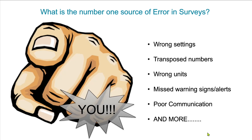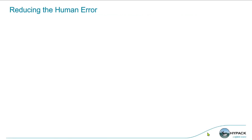That means you may enter settings wrong, you transpose numbers — I've done it, I'm 100% guilty of it. I went to measure something, transposed a number, threw it off by a foot. It happens. Missing warning signs — HyPack alerts you if something goes wrong, not always, but there are warning signs within the software designed to help you realize there might be a problem. Or between the office and the field there was a miscommunication — somebody told you to survey with a different piece of hardware. Ninety percent of the time it's user error.